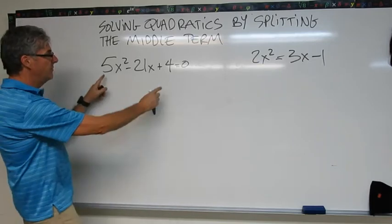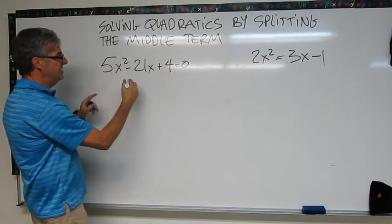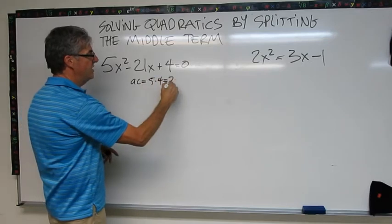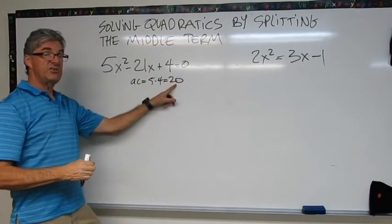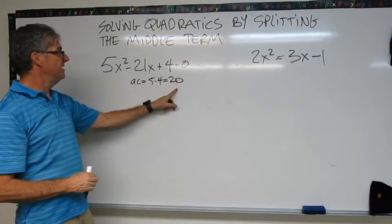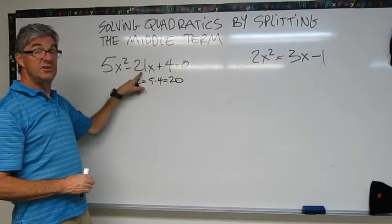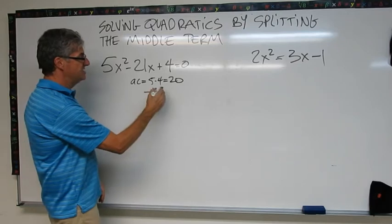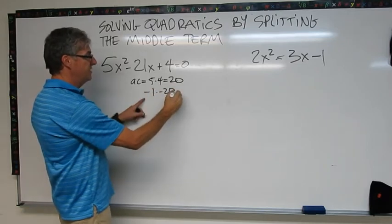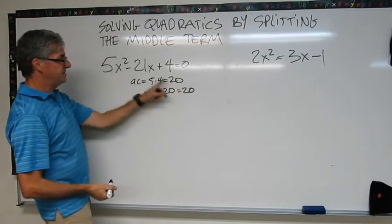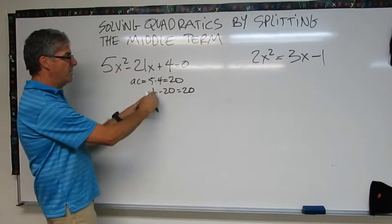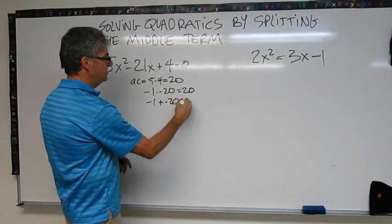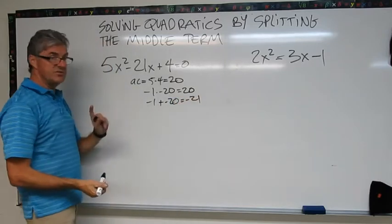If you recall we multiply the A times the C. AC equals 5 times 4 which is 20. Now we need two factors of positive 20 that add up to negative 21. And these factors are negative 1 times negative 20. This equals positive 20 that gets us our AC and negative 1 plus negative 20 is negative 21. So these are our two factors.